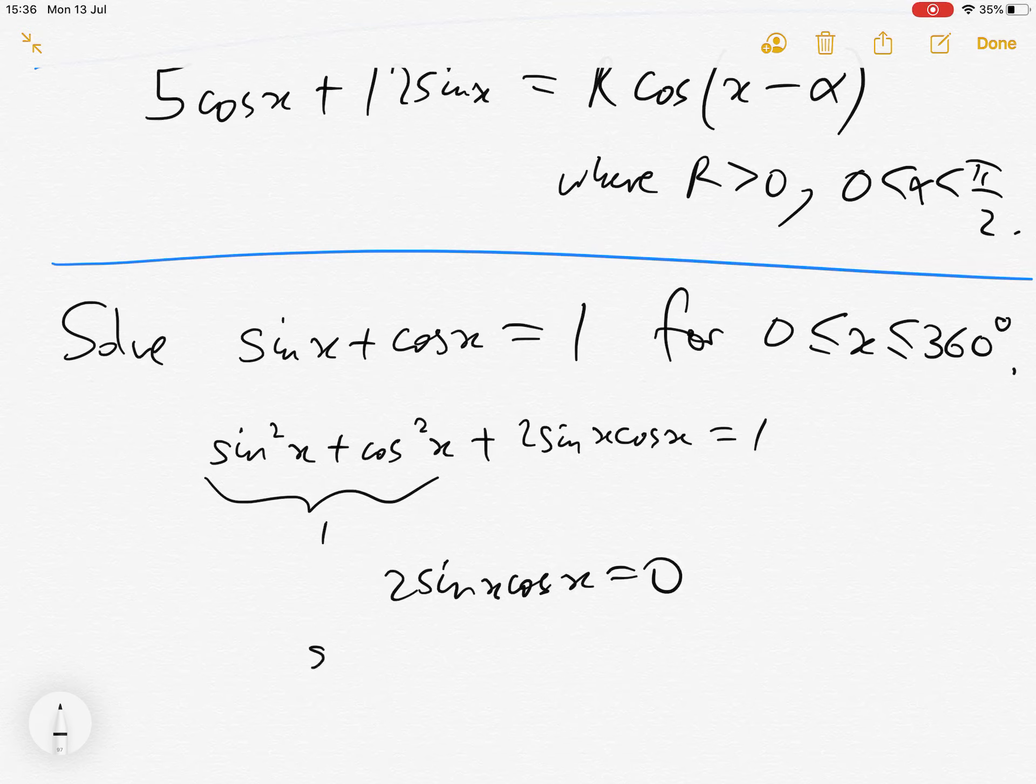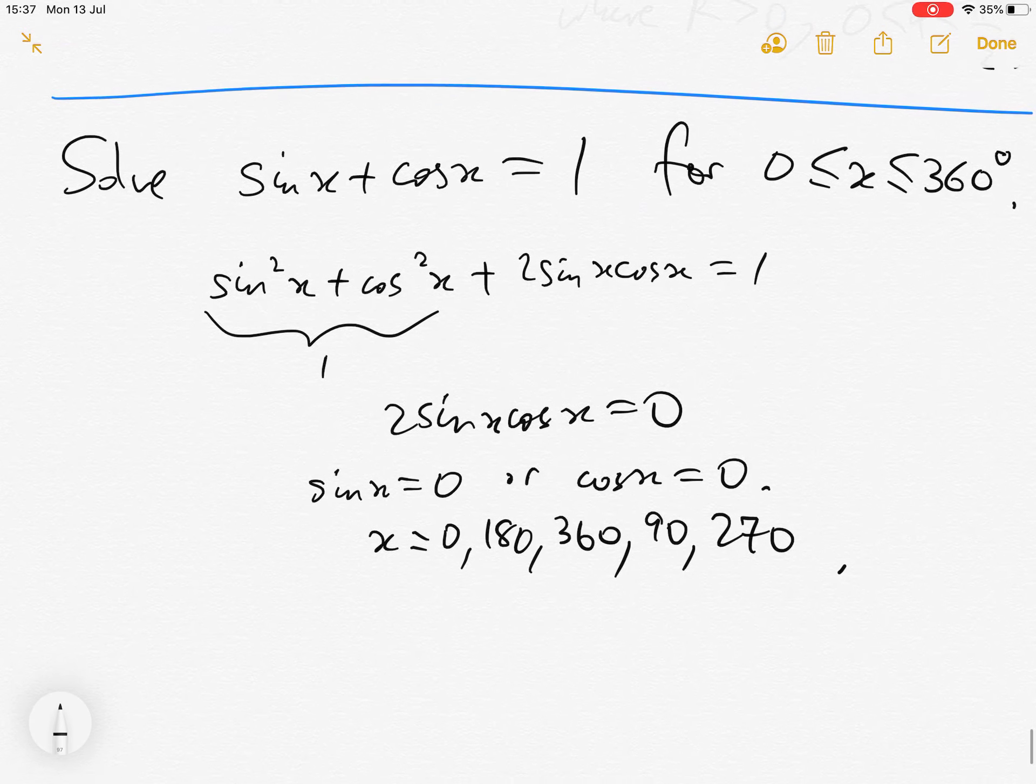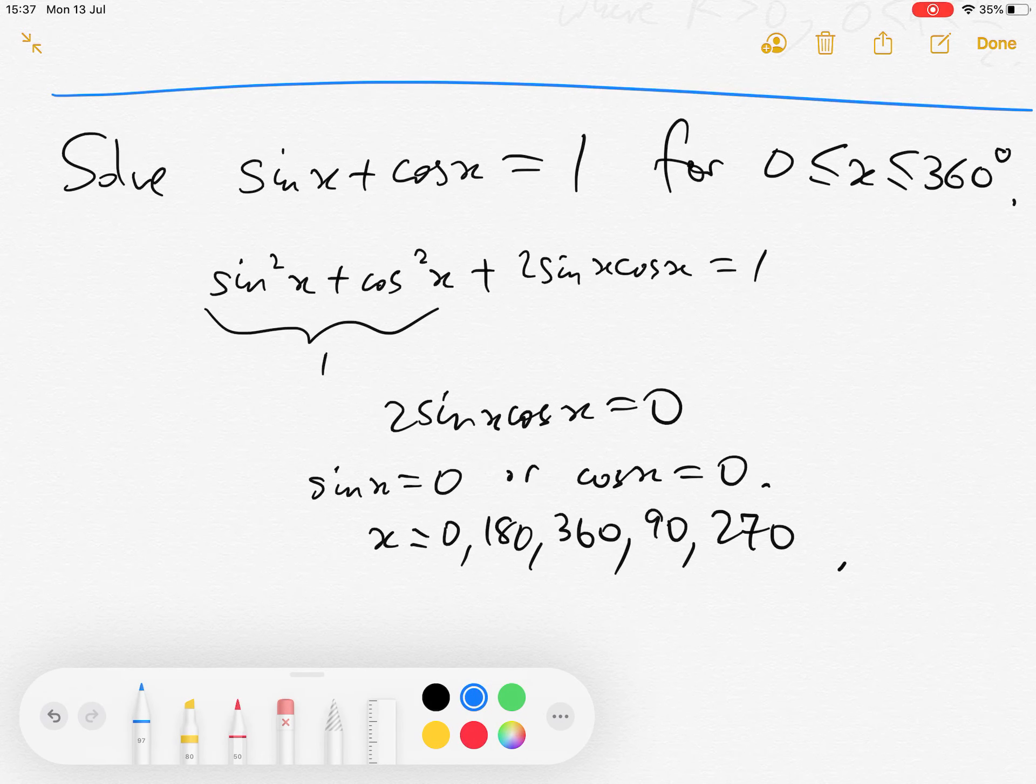And then, so either sin x is 0 or cos x is 0. And then we get x is 0 or 180 or 360. And from cos x equals 0 we get 90 and 270. And then we have to be careful because sometimes squaring introduces extra solutions. So in fact, which of these solutions are not valid? Well, which ones are valid? So 0 is okay, isn't it? Because sin 0 plus cos 0 is 1. 180 is not okay because sin 180 is 0 but cos 180 is minus 1. So we see actually we just get the three solutions 0, 90 and 360.